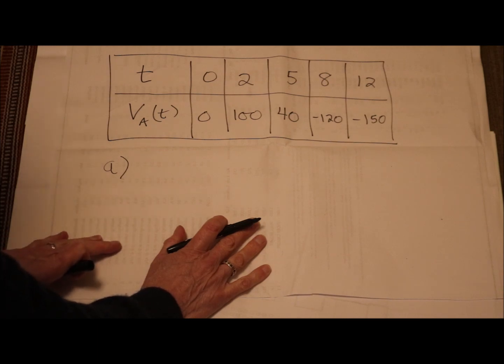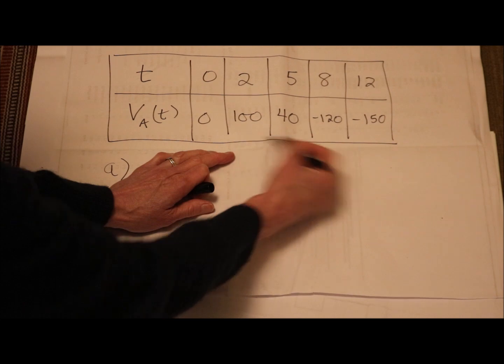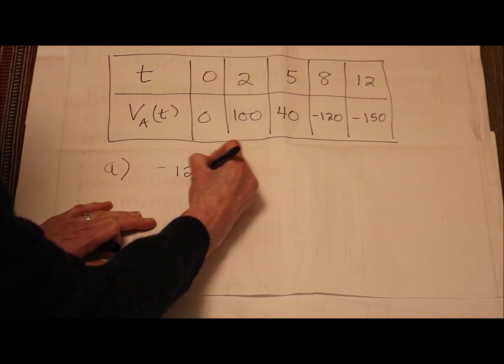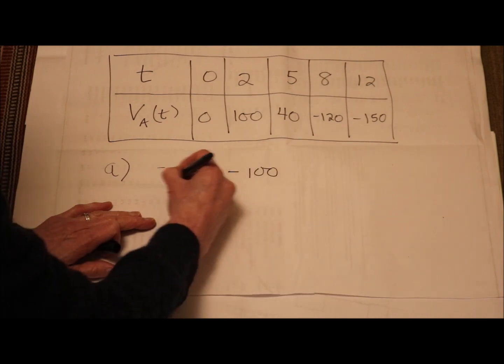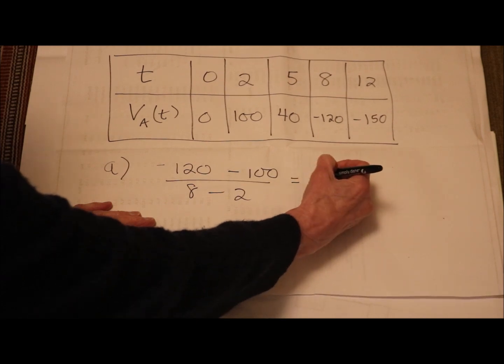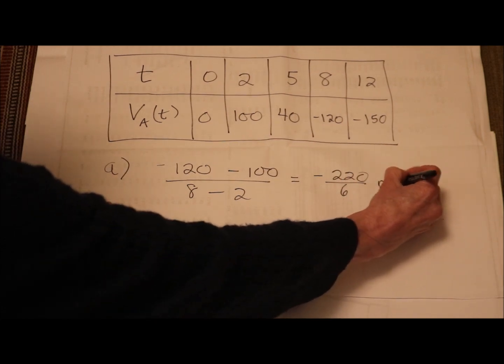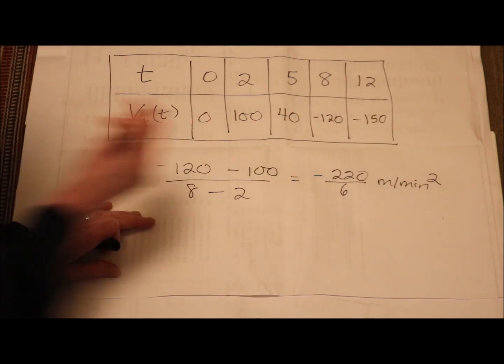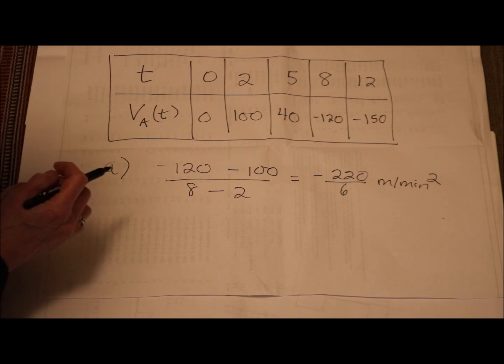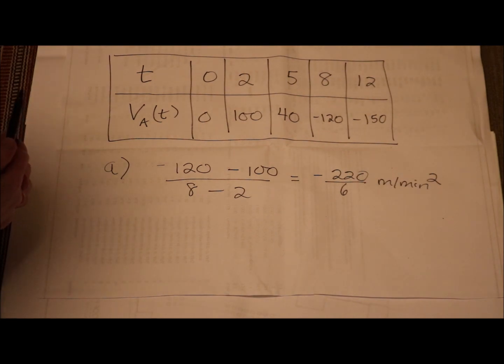So if I'm looking for the average acceleration on the interval 2 to 8, I'm just going to find the change of y, which is negative 120 minus 100, over the change of x, which is 8 minus 2, and that gives me negative 220 over 6 meters per minute squared. That's your average acceleration. You certainly may simplify that to 110 divided by 3 meters per minute per minute, but you don't need to simplify.